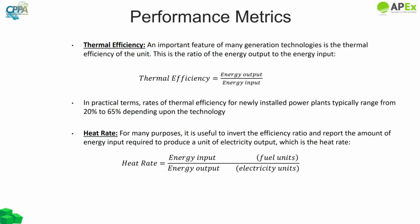Let's discuss some important performance metrics of thermal generation units. An important feature is thermal efficiency, given as a ratio of energy output to energy input. Theoretically the maximum is 100%, but in practical terms, newly installed power plants typically range from 20% to 65% depending on the technology. Higher efficiency saves on fuel cost and reduces pollutants produced per unit of electricity generated.